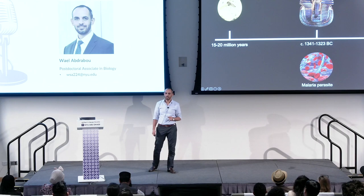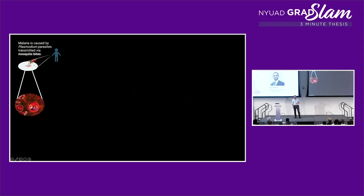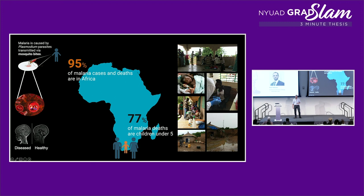Malaria is transmitted to us by mosquitoes. The organism makes its way to the blood, where it invades the red blood cells, and can eventually reach the brain, blocking the blood supply and causing death. 95% of malaria-related deaths are in Africa, where every two minutes a child passes away from malaria.